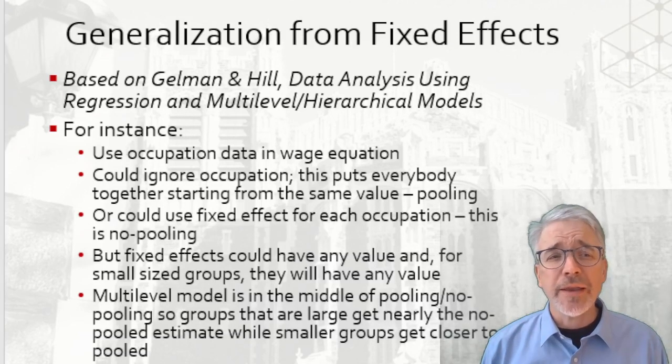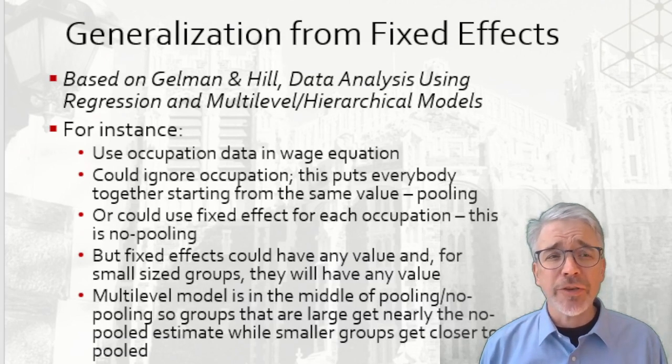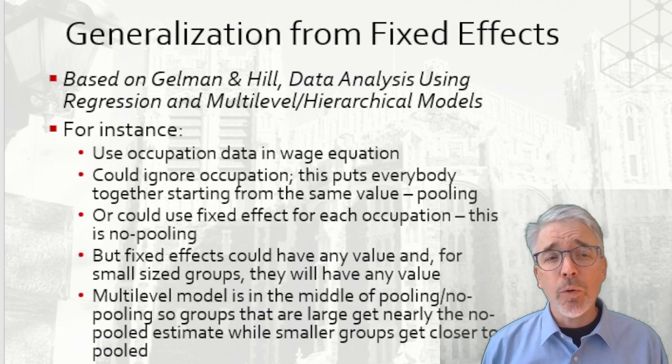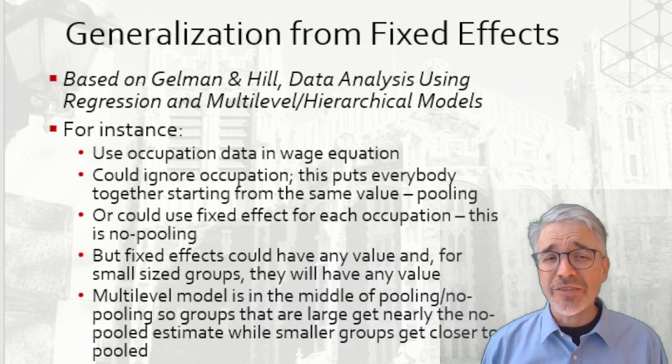For instance, you might want to use state data in some equation on cannabis use to understand how state policies impact. If we didn't put in any factor or fixed effect for state, then that would pool everyone together, everyone starting from the same value. Or you could use a fixed effect for each state. That's the no-pooling method.